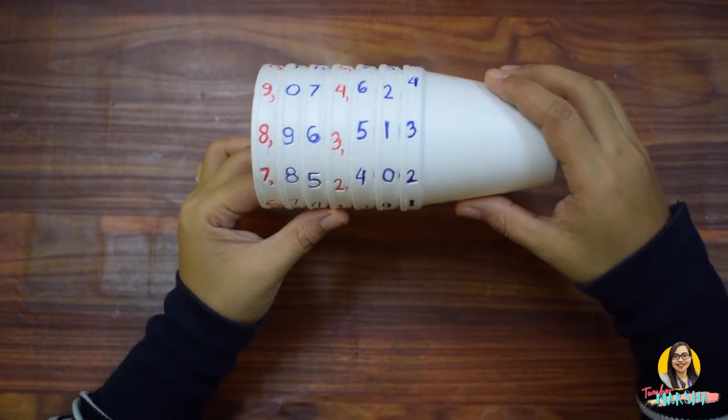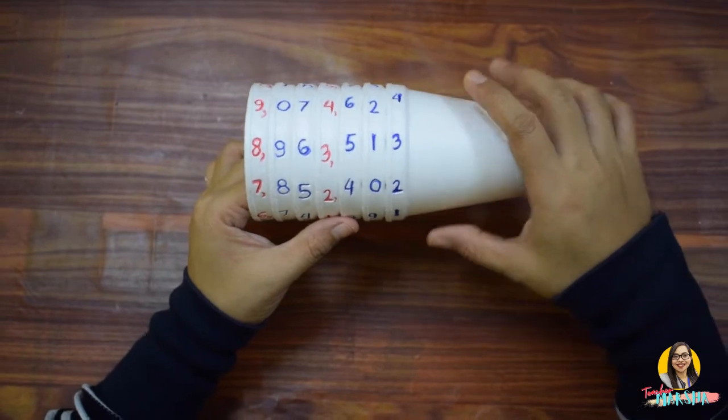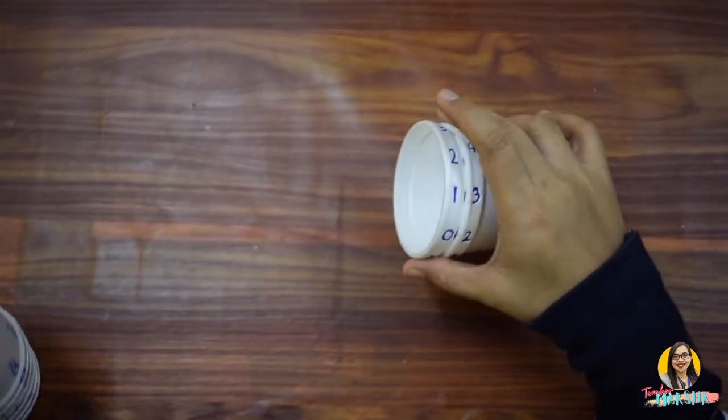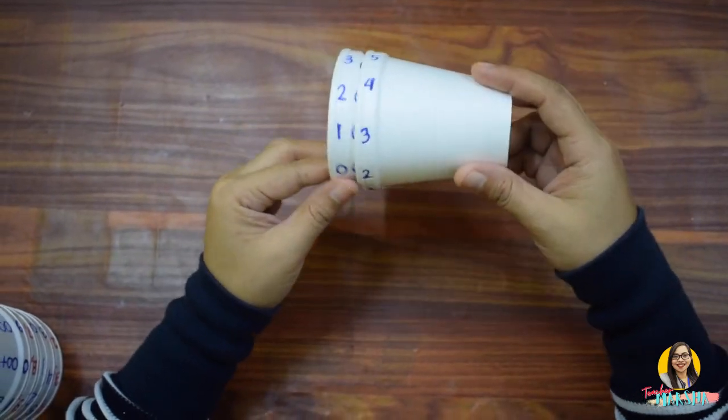Now that our place values styro cups are ready, let's go ahead and start reading. Let's begin with tens. So, all you need is the ones cup and the tens cup.